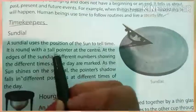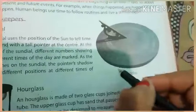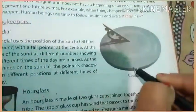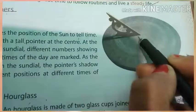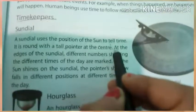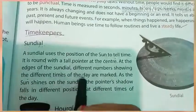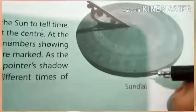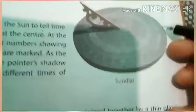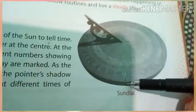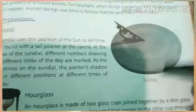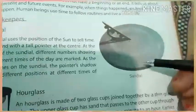It is round with a tall pointer at the center. Sun dial is round in shape and it has a pointer at the center. At the edges of the sun dial, different numbers showing the different times of the day are marked. In the picture you can see there are different numbers at the edges of the sun dial which show the different times of the day, as we see in the clock.